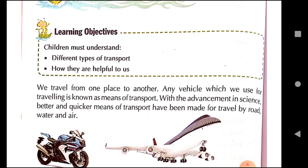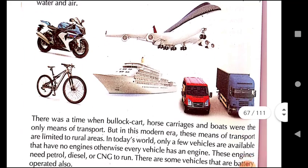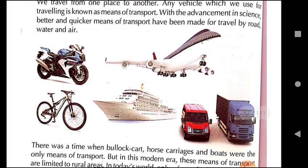These are three modes of transportation. We can go from one place to another by land, by air or through water. The vehicles which are used in these modes are known as means of transportation. You can see pictures of some means of transportation — a bike, aeroplane, bicycle, ship, jeep, van, truck.